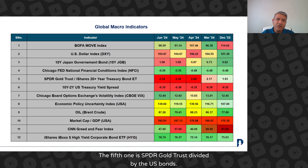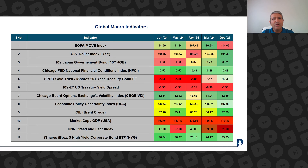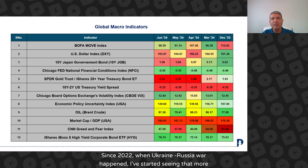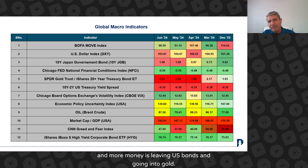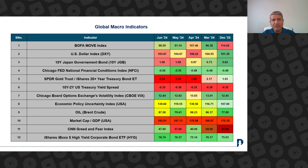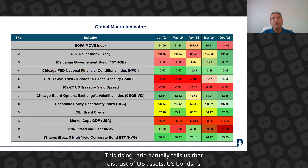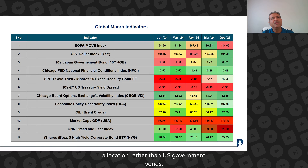The fifth one is SPDR Gold Trust divided by US bonds. Since 2022, when the Ukraine-Russia war happened, I've started seeing that more and more money is leaving US bonds and going into gold. This rising ratio actually tells us that distrust of US assets and US bonds is actually rising. More and more central bankers are preferring having gold in their asset allocation rather than US government bonds.